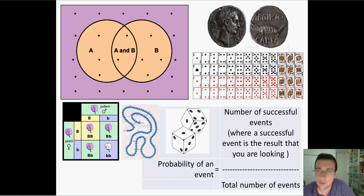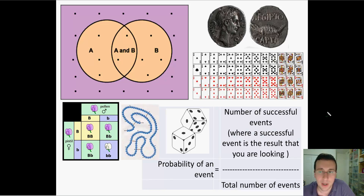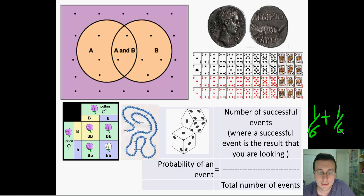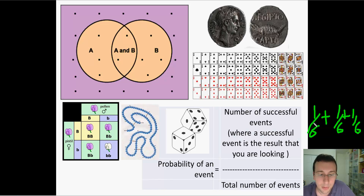Let's do this with a die. What are the chances of throwing a die and getting an even number? There's a one-in-six chance of getting a two, a one-in-six chance of getting a four, and a one-in-six chance of getting a six. Each of those events cannot happen at the same time, so they're mutually exclusive. Adding those chances: three out of six, or one-half.